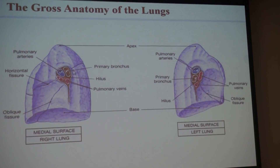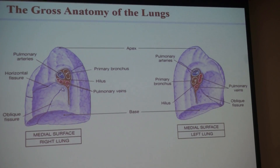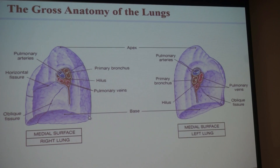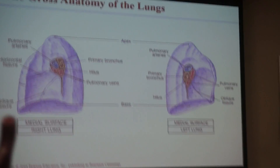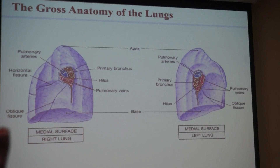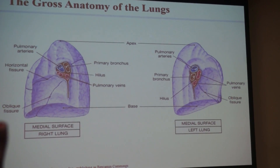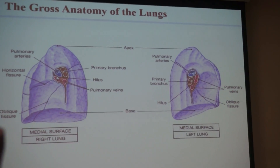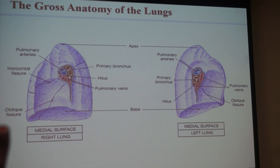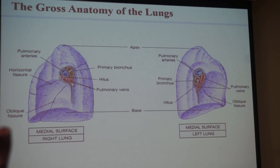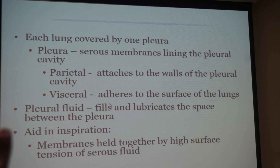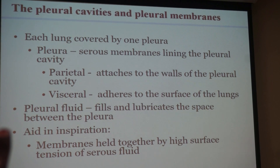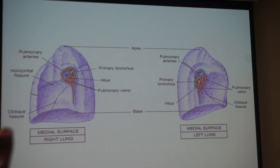If you look at the medial surface, they have a hilus. Remember the term hilus or hilum? It's an indentation area where blood vessels come in and out, and also where the bronchus comes in. The cardiac notch is on the left lung.